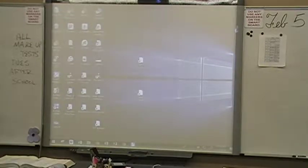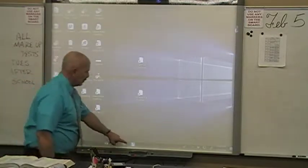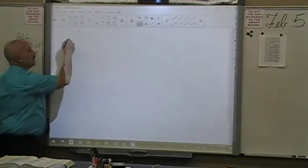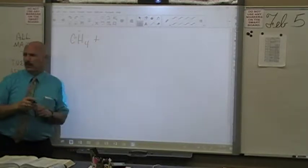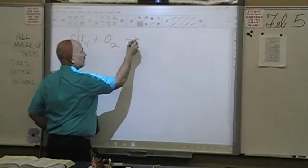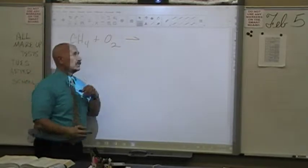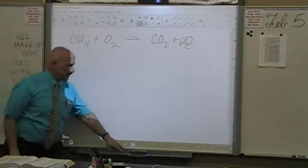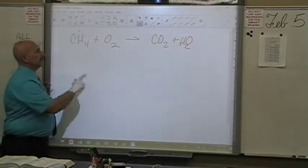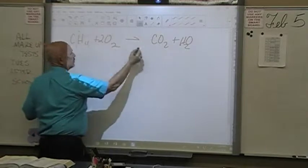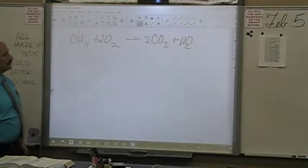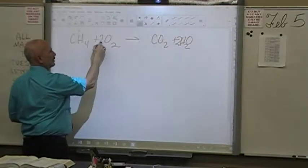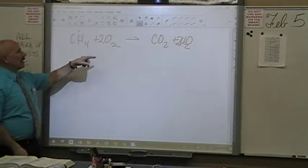Let's go over the bell work question. What's the formula for methane? We're reacting in a combustion reaction, so the other component is oxygen. The products in a combustion reaction that has carbon are always carbon dioxide and water. Here's our reaction — we need to balance it. Using a two in front of water and a two in front of oxygen gives us one carbon, four hydrogens, and four oxygens on both sides.